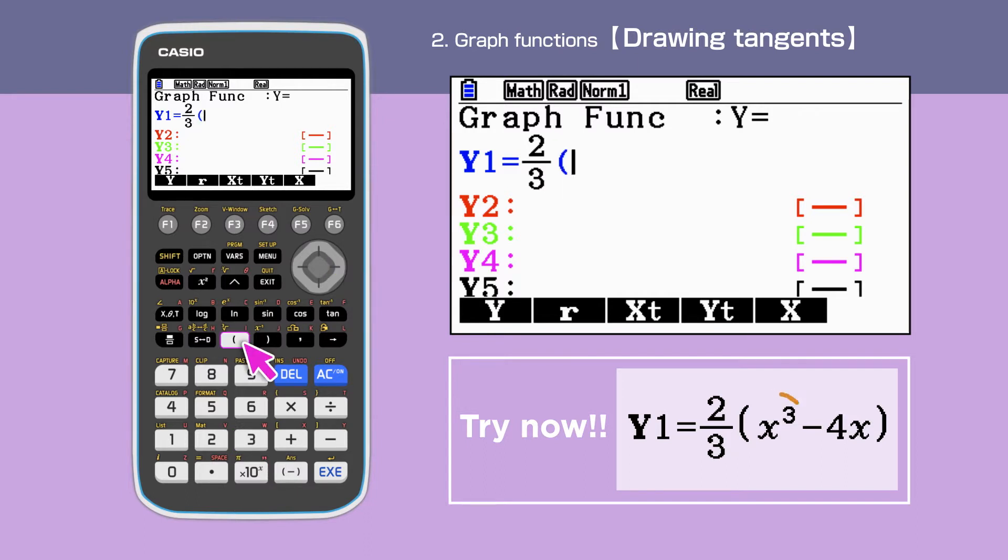In order to enter x cubed, we press x followed by the circumference key, also known as a caret symbol or hat symbol.